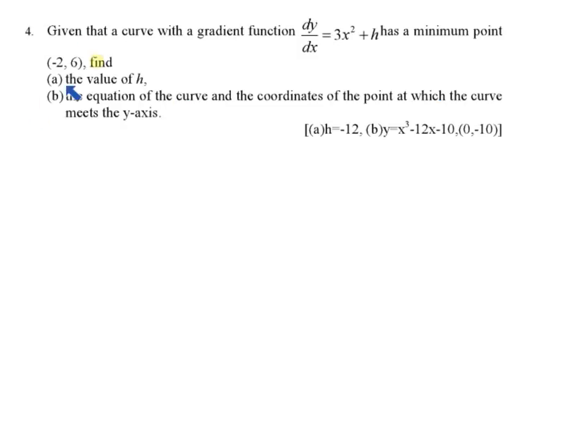Now we proceed to example 4. Given that the curve has a gradient function, dy/dx equal to 3x square plus h. So this is your gradient function, dy/dx equal to 3x square plus h. And this curve has a minimum point, minus 2, 6.